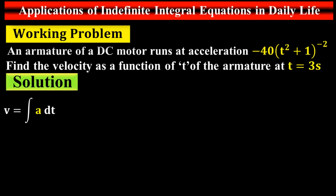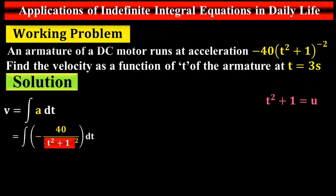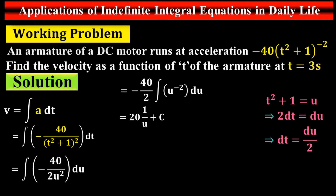Solution: velocity equals the integral of acceleration, where a = −40/(t² + 1)². We use substitution: let u = t² + 1, so 2t dt = du, meaning dt = du/2. Substituting these values, we take −40/2 out of the integration, perform the integral, and simplify to get v = 20 · (1/u) + C. Initially at t = 0, C = 0.